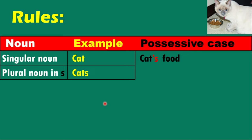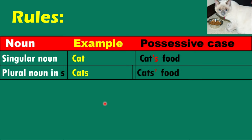For a plural noun ending in s, to form the possessive case we just add only an apostrophe, not apostrophe-s. For example, cats' food. The pronunciations are the same — cat's food and cats' food — and in conversation the context will tell you which form is being used.